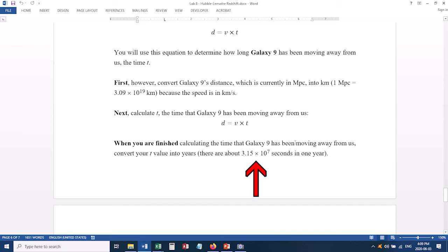And again, the lab manual gives you the conversion factor to go from seconds to years. So you do a conversion first, then you do the calculation, and then when you're finished, you do another conversion. So conversion, calculation, conversion, and that gives you the age of the universe in years.